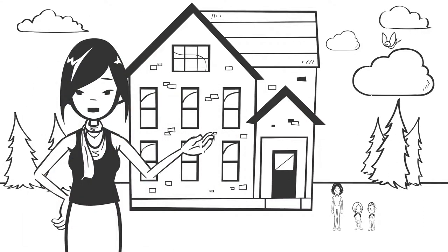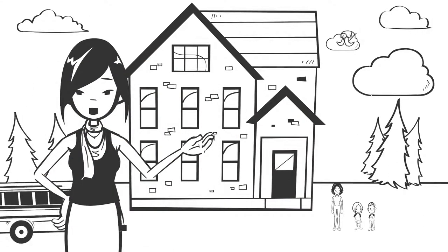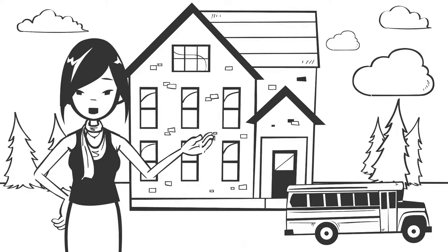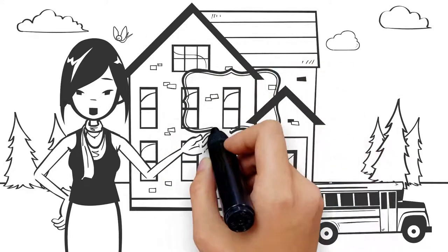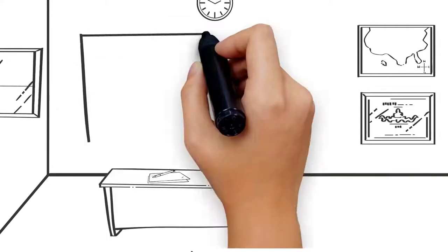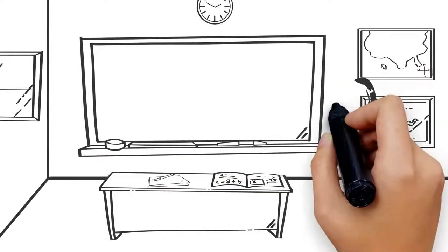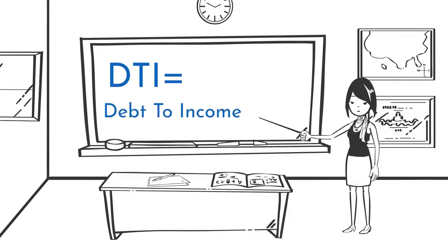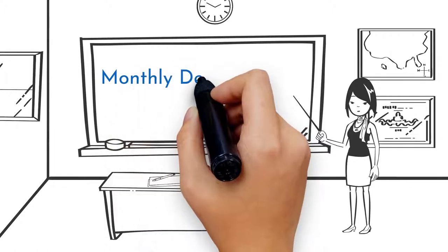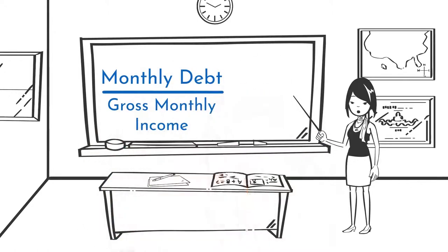If you've been thinking about purchasing a home and applying for a mortgage, one of the terms you may hear is DTI. But what is DTI? DTI, or debt-to-income ratio, is a percentage calculated by dividing your monthly debt by your gross monthly income.